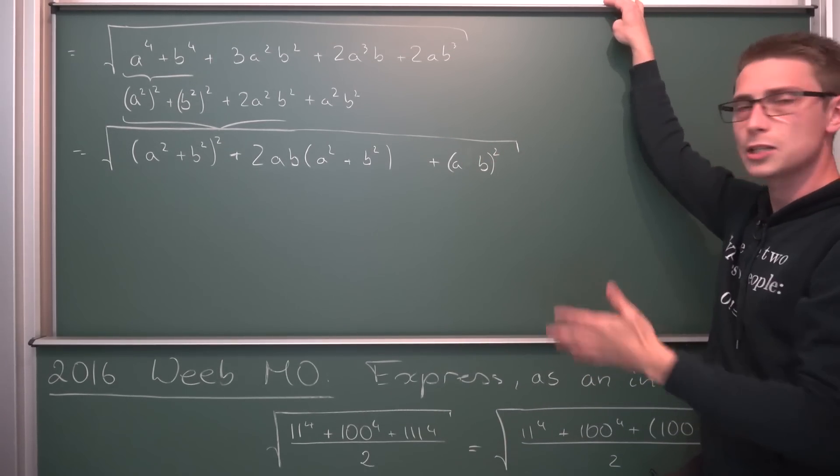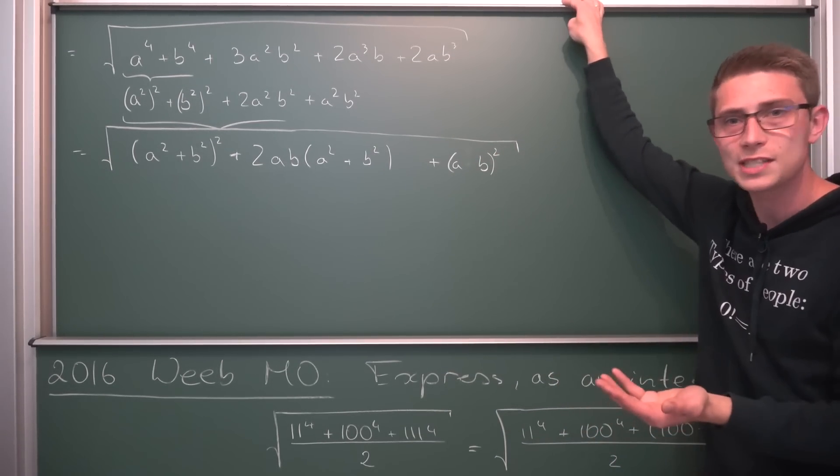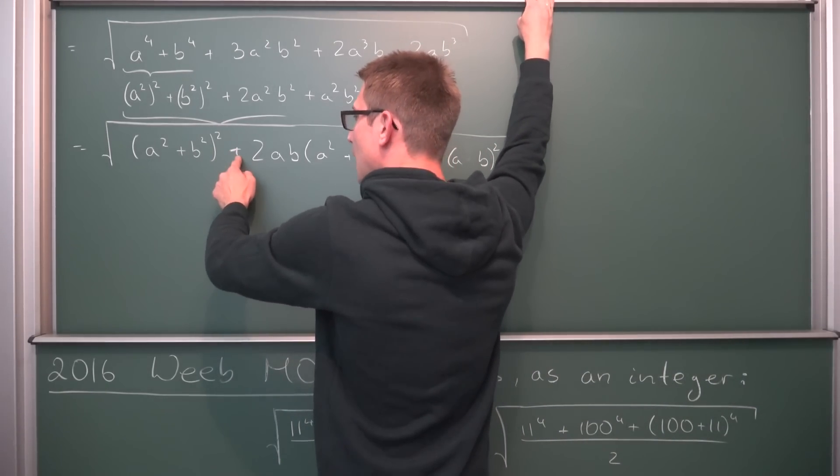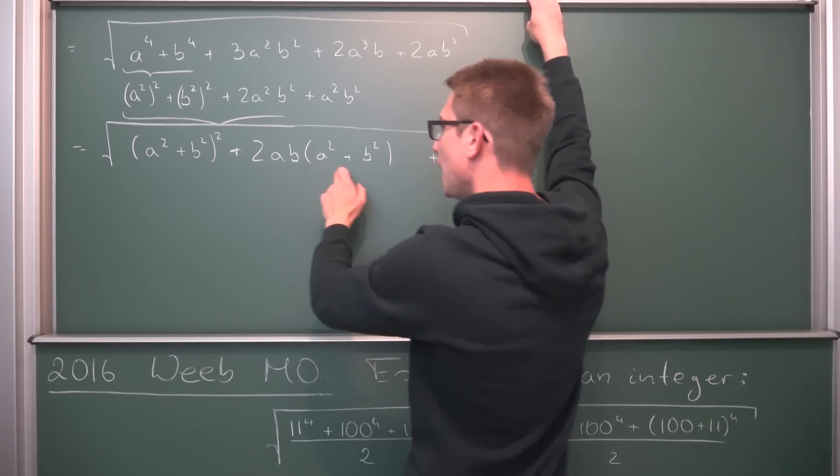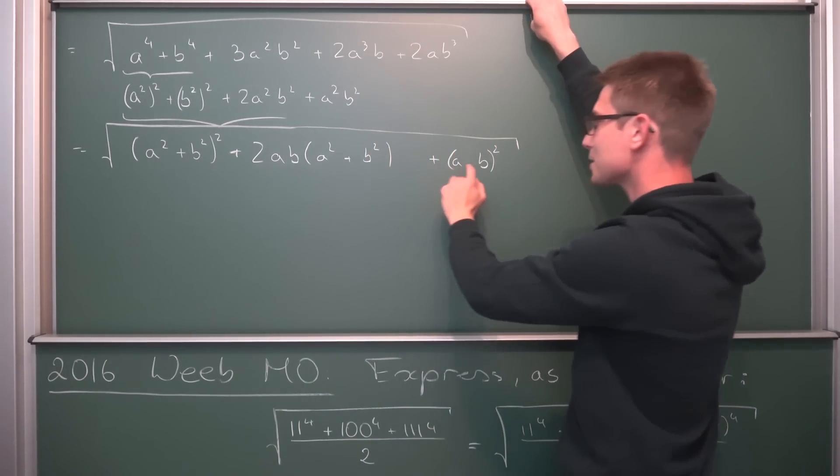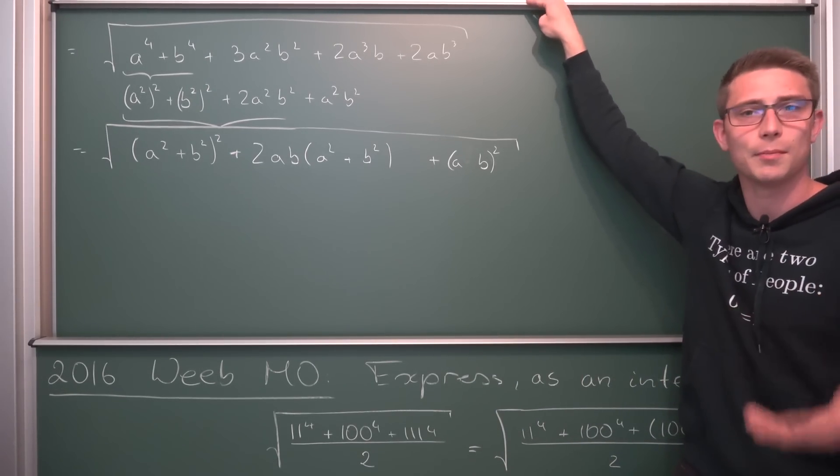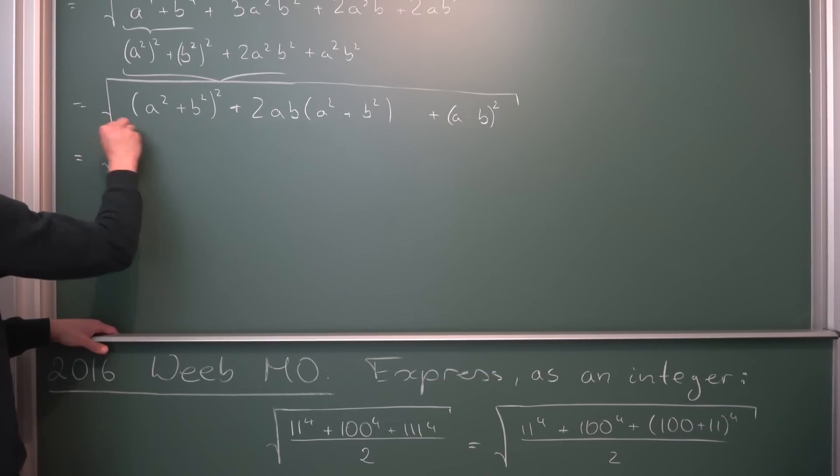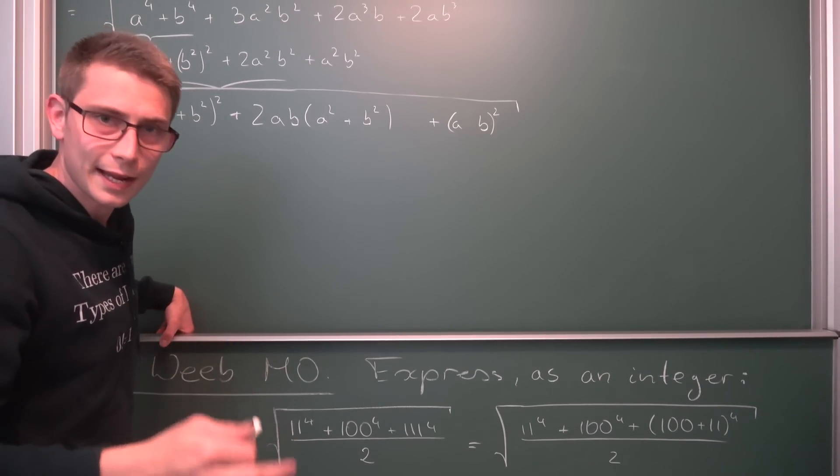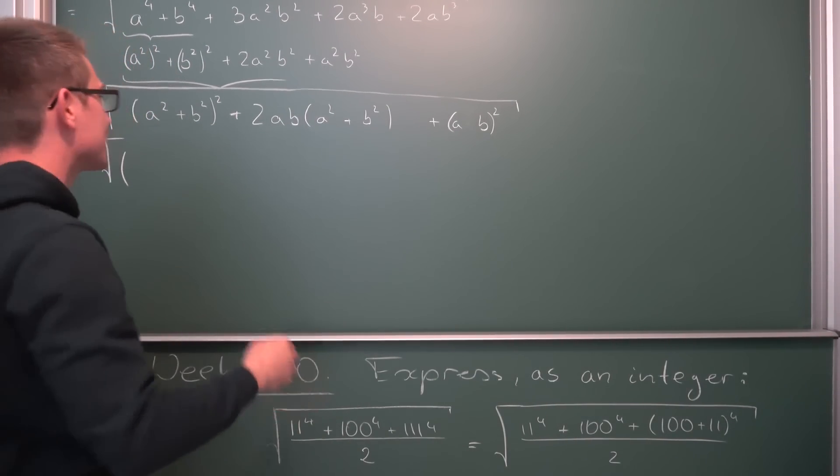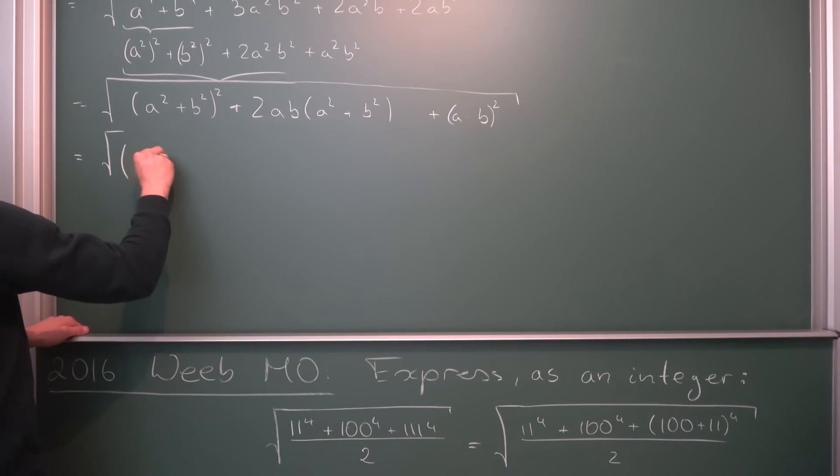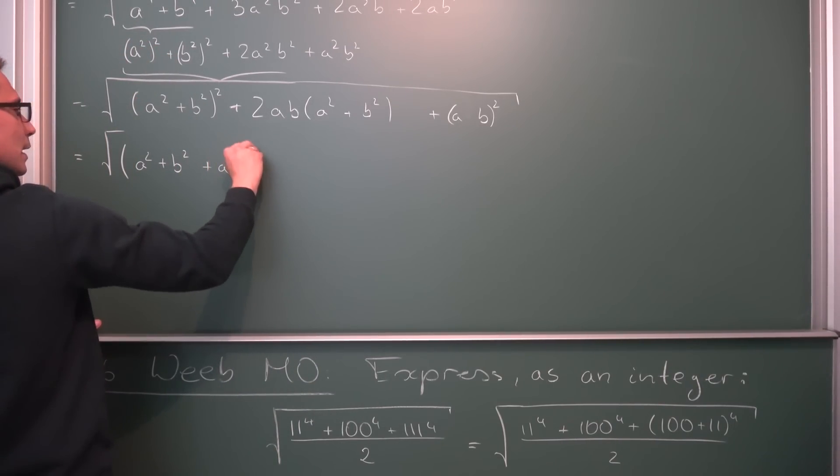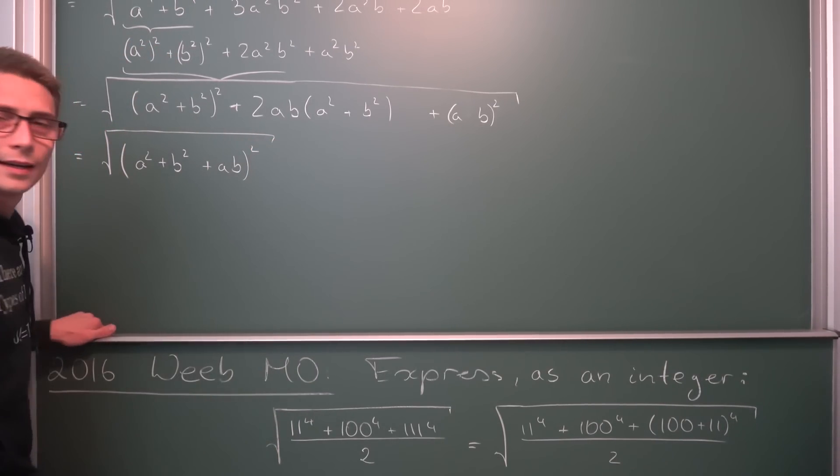Isn't that magical? We got x squared plus 2xy plus y squared. This is just a binomial once again. What we get here is the square root of. This is just x plus y squared. Where our x is a squared plus b squared. And our y is plus ab. And the whole thing is squared. Isn't that cool?